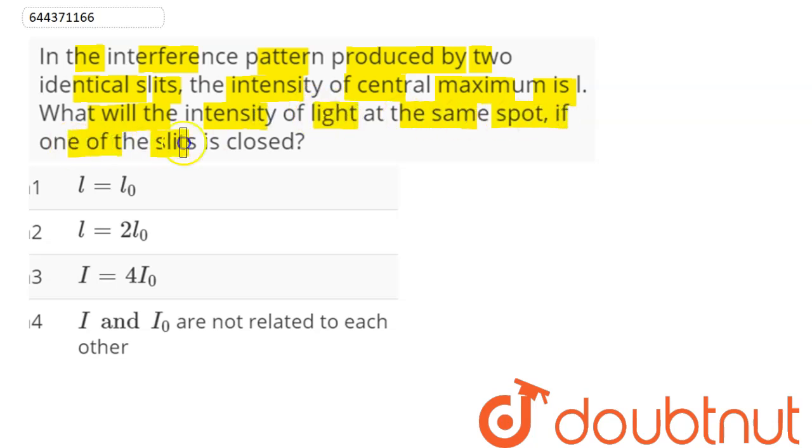So we can see here this is Young's double-slit experiment. At the central point there will be a central maxima. Now these are two identical slits, so both the intensities will be the same at these points.